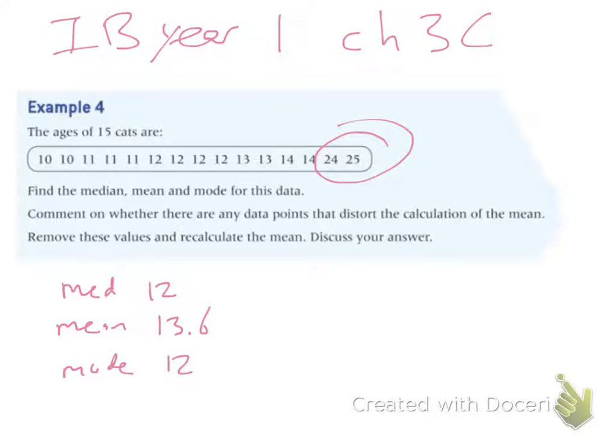If you do that, you end up finding out your mean drops down to 11.9, which is definitely closer to the mode and the middle number or median.